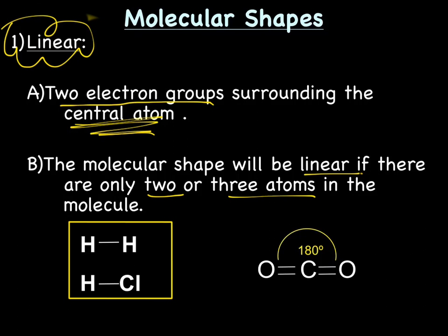Then if we look at this example on the right, you'll notice that there is the central atom, the carbon, and there are two electron groups. A double bond there and there. That makes the molecular shape linear. And the angle between the two bonds or the two electron groups for a linear molecule is 180 degrees. That's as far apart as the two electron groups can get.